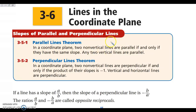Parallel lines — we've talked about parallel lines. We know that they never intersect. The key here is that parallel lines have the same slope. Vertical lines are always parallel. Horizontal lines are always parallel. Otherwise, any non-vertical lines, as long as they have the same slope, will be parallel.